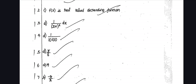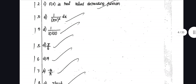Especially in some easy chapters like Matrix, Complex Numbers, and Truth Table. In easy chapters, there is a higher chance of making careless mistakes.